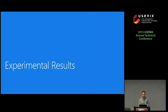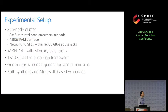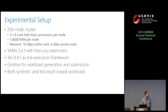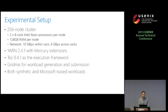Now for some experimental results. We evaluated Mercury on a cluster of 256 nodes — you can see the cluster characteristics. We are using YARN 2.4 with our Mercury extensions, and we are using Tez — the next generation MapReduce from Apache — and Gridmix for generating workloads and submitting jobs. We have both synthetic and Microsoft-based workloads.